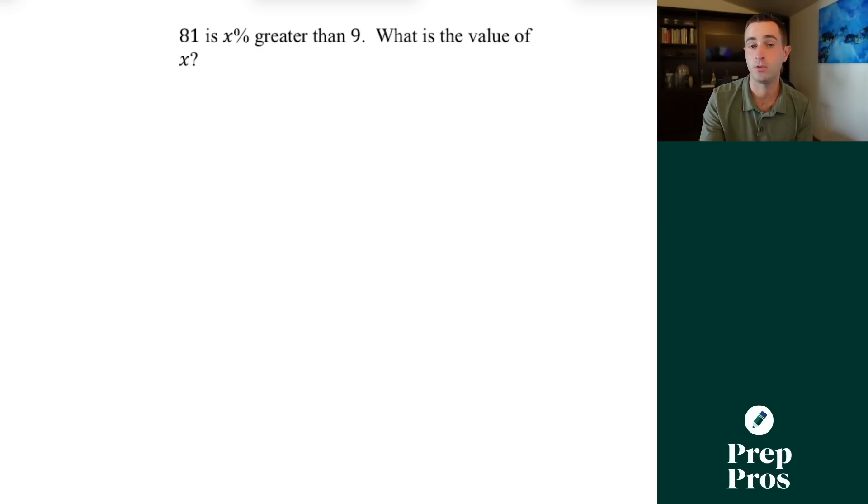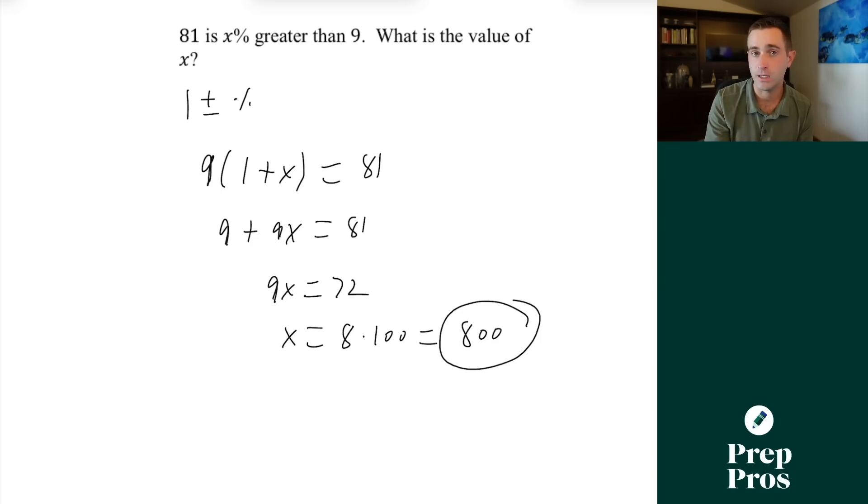But what we need to understand with percent increases or decreases is we're always doing 1 plus or minus the percent expressed in decimal form. So if we're saying 81 is x percent greater than 9, what we're really saying is 9 times 1 plus x, our percent increase, is equal to 81. We'll get 9 plus 9x is equal to 81. We'll get that 9x is equal to 72, and we'll get that x is equal to 8. And then since we want to put it in percent form, we're going to have to multiply this 8 by 100, and that will give us our correct answer of 800%.